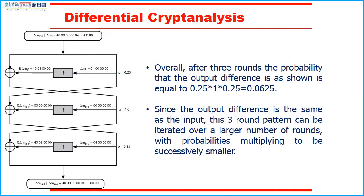This figure illustrates the propagation of differences through three rounds of DES. The probabilities shown on the right refer to the probability that a given set of intermediate differences will appear as a function of the input differences. Overall, after three rounds, the probability that the output difference is shown equals 0.25 × 1 × 0.25 = 0.0625. Since the output difference is the same as the input, this three-round pattern can be iterated over a larger number of rounds, with the probabilities multiplying to successively smaller values.